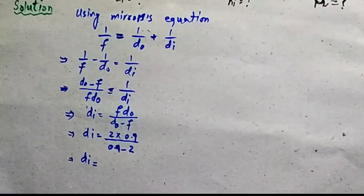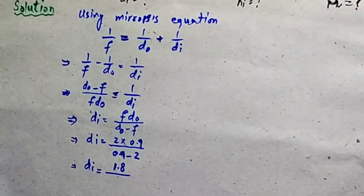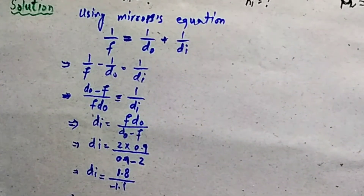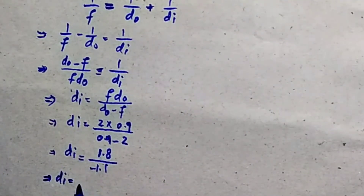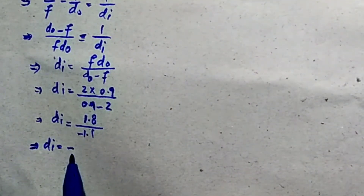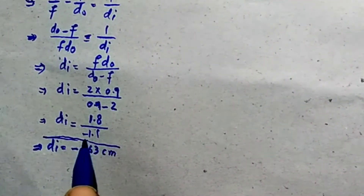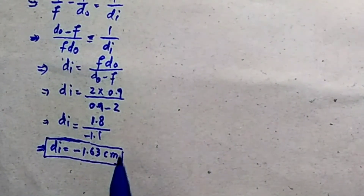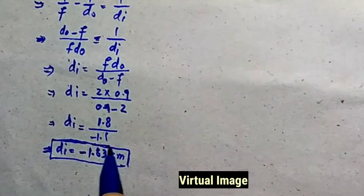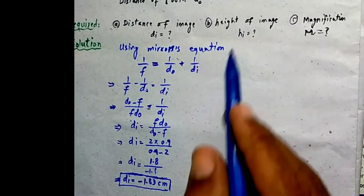Continuing the calculation: d-i = 1.8 / (minus 1.1) = minus 1.63 cm. The negative sign indicates the image is virtual and formed behind the mirror. This satisfies the first requirement — the distance of image is minus 1.63 cm.